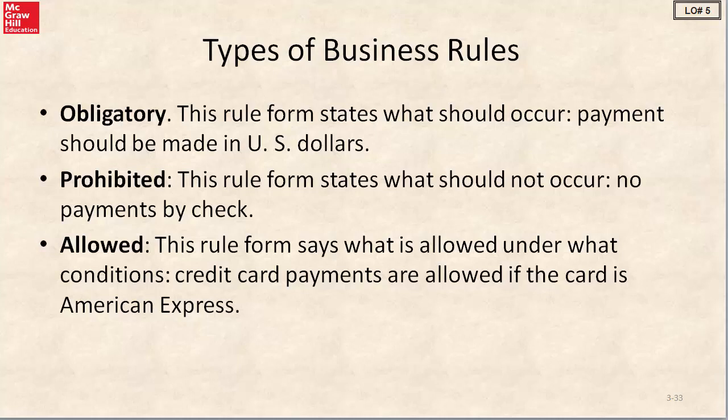Third, there is the allowed type of business rule. This rule form says what is allowed under what conditions. For example, credit card payments are allowed if the card is American Express.